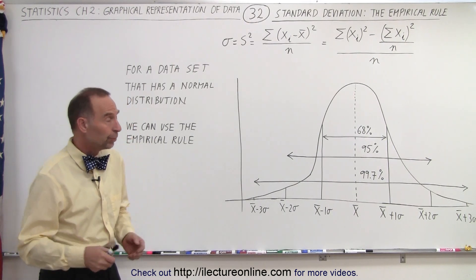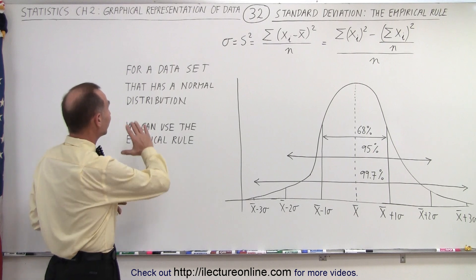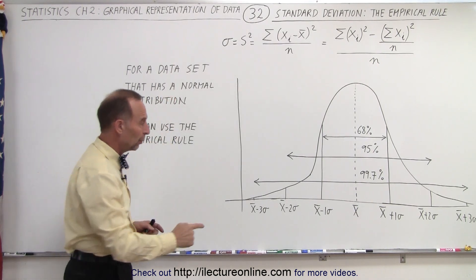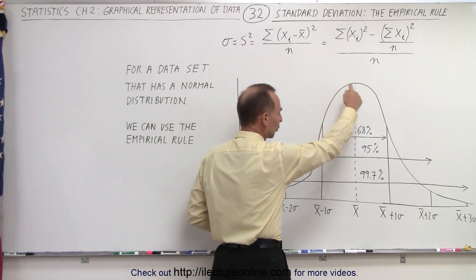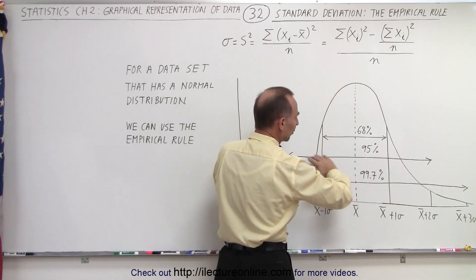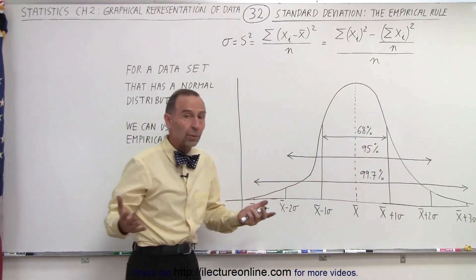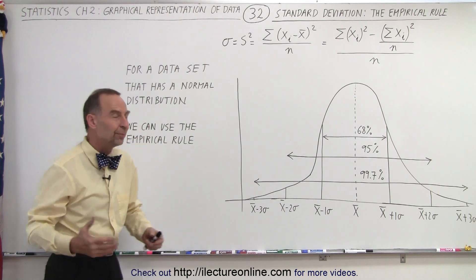What is the empirical rule? Well, assuming that we have a data set that has a normal distribution, we call that a typical bell curve like this. So if the data set looks like this, this would be what we would consider a nice random data set.